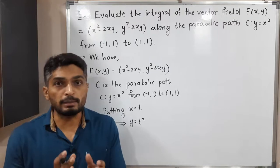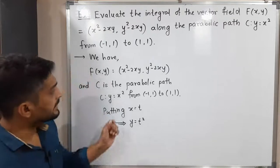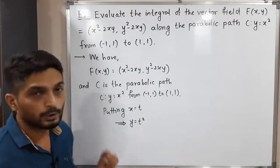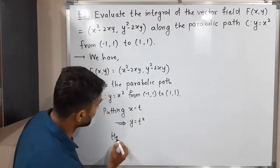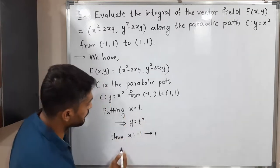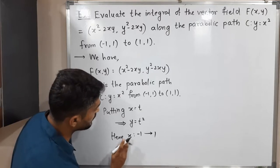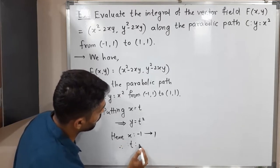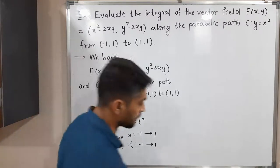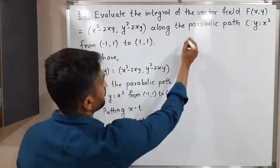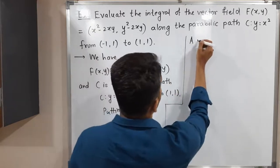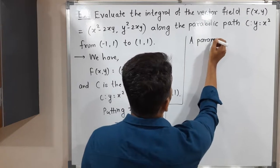Now we are interested to find the limits of t. You can easily see here the first coordinates are values of x. x varies from -1 to 1. Here x varies from -1 to 1 and x = t, so therefore t also varies from -1 to 1. In this way, we got limits of t. Let us define the parametrization of this curve.